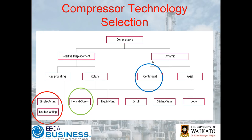Depending on the nature of the application, you're going to use a certain type of compressor. The predominant one in the market nowadays is the helical screw — you see a few reciprocating compressors but not too many. What's interesting, and often overlooked, is that reciprocating compressors — especially the good old ones — are actually more efficient than your screw compressors by and large.